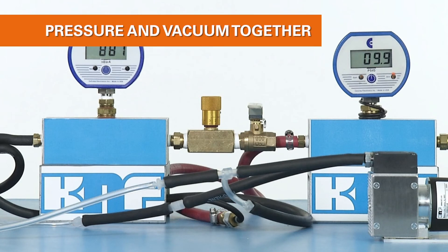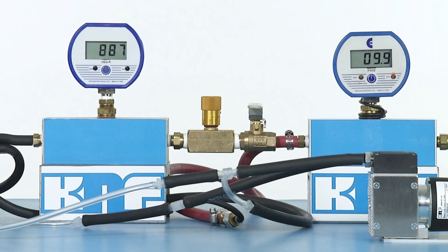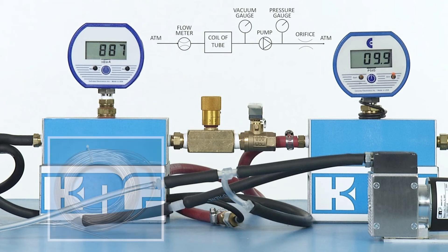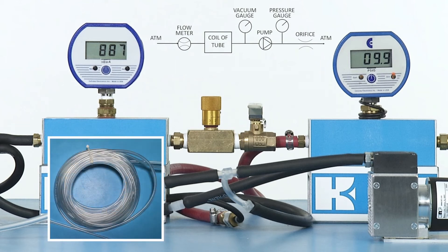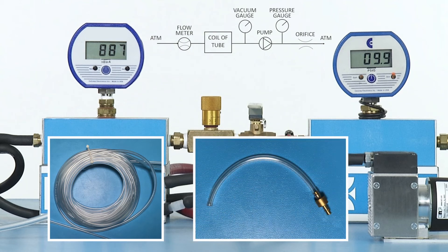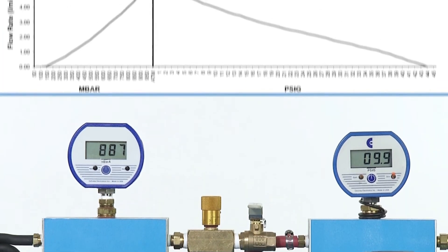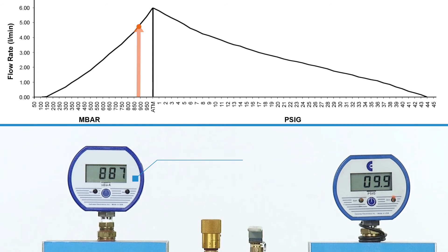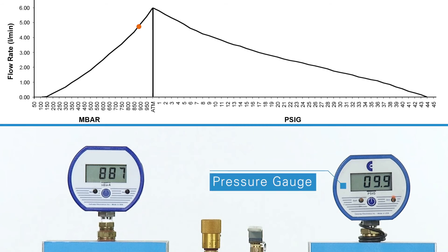What happens to the flow rate when there is restriction on both sides of the pump? This example demonstrates how to use the flow curve to estimate the flow rate performance of a pump when both vacuum and pressure conditions exist. A long length of tubing with a small inside diameter is connected to the inlet side of the pump, and a small restrictive orifice is connected to the outlet side. By teeing in the vacuum gauge, the display shows 887 millibar absolute of restriction created by the tubing on the inlet. On the outlet side, approximately 10 PSIG is measured on the pressure gauge teed in between the pump and the orifice.